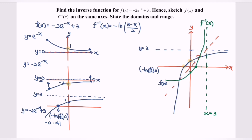Finally, we state the domain and range. Since f and f inverse are inverses of each other, the domain for f is from negative infinity to infinity, where neither endpoint is included. The domain for f inverse, referring to the graph, is from negative infinity to 3, where 3 is not included. As a conclusion, the domain of f equals the range of f inverse, and the domain of f inverse equals the range of f.